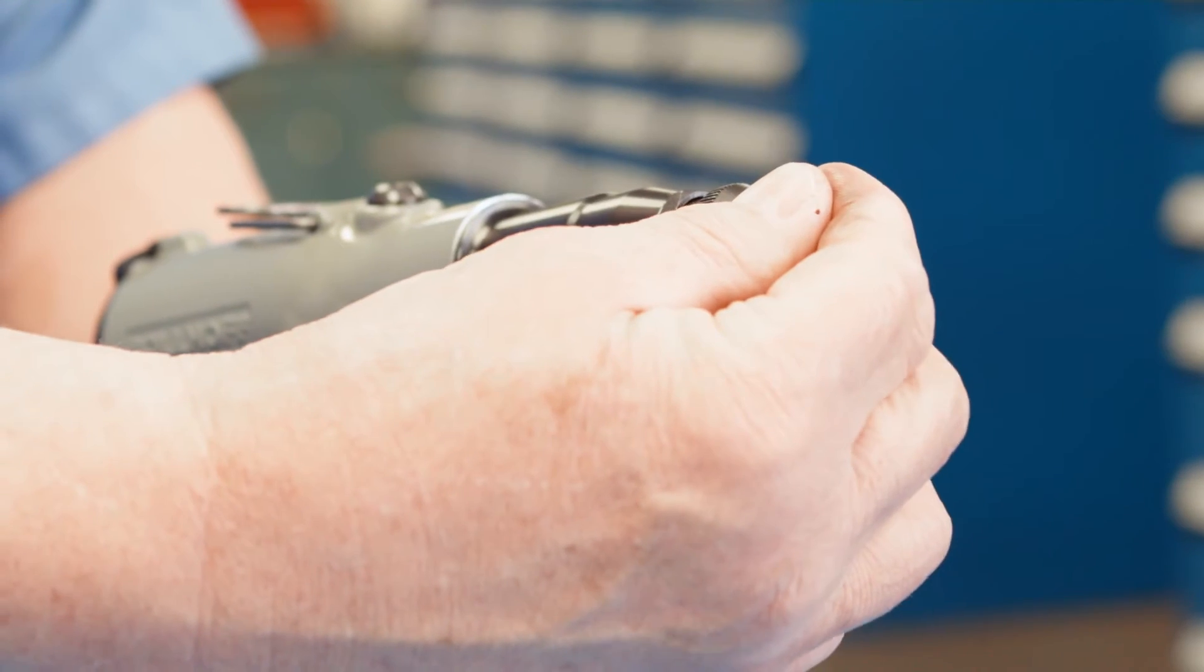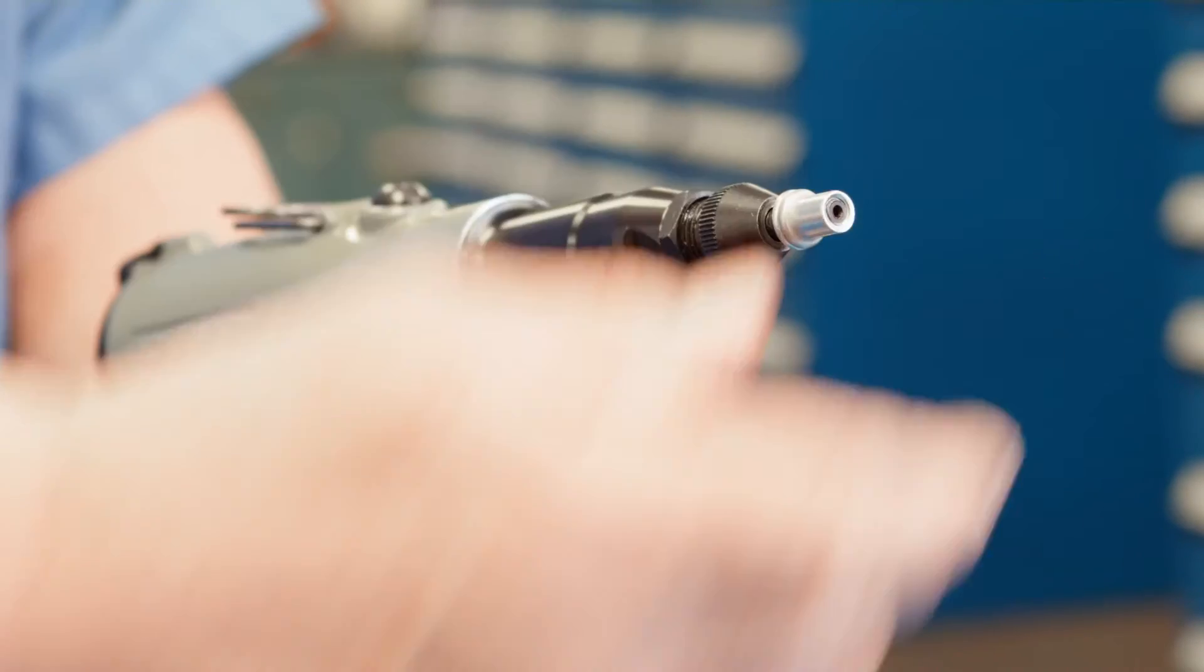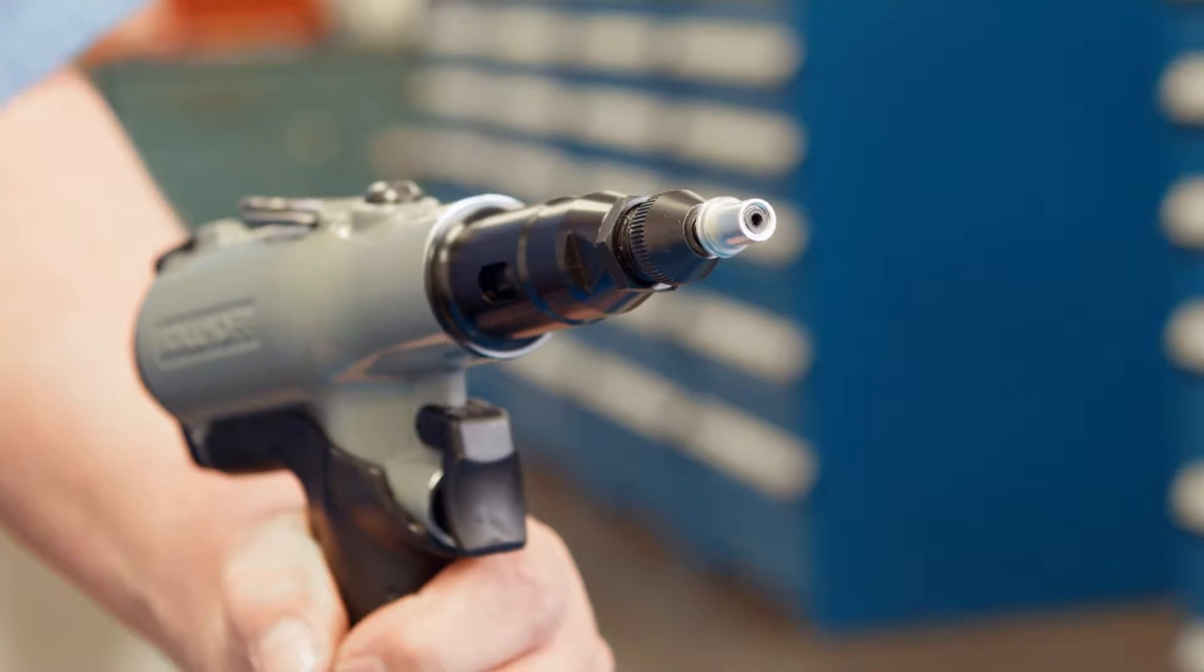You must cycle the tool between each adjustment of the pressure regulator to properly reset the tool before you set your rivnut.